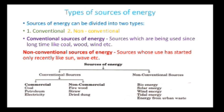Sources of energy can be classified into two parts: conventional and non-conventional. Conventional sources are further classified into commercial and non-commercial. Commercial can be classified into coal, petroleum, and electricity. Non-commercial means firewood, straw, and dried dung — what we use in our homes. Within non-conventional sources of energy, we have bioenergy, solar energy, wind energy, tidal energy, and energy from urban waste. Each and every topic we will discuss — don't worry, just remember all those points.